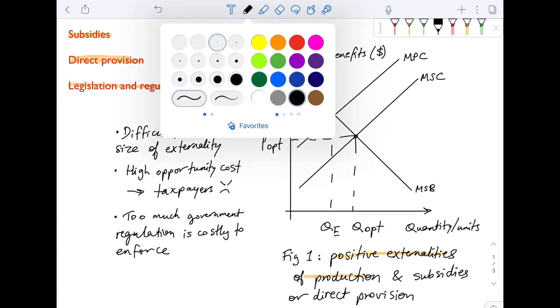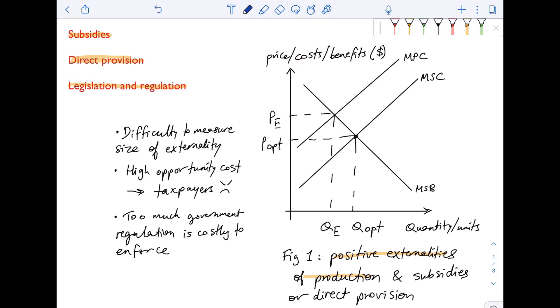So if the government decides to subsidize or interferes through direct provision, remember initially this is the initial market failure. You've got MSC is lower than the MPC because of the existence of a positive externality of production. The market is actually providing PE and charging PE and providing QE.